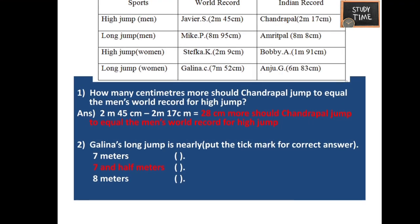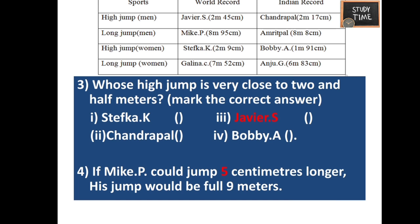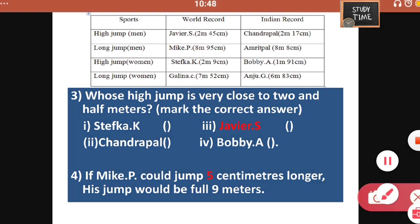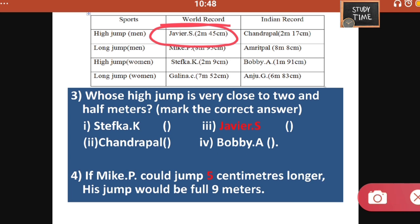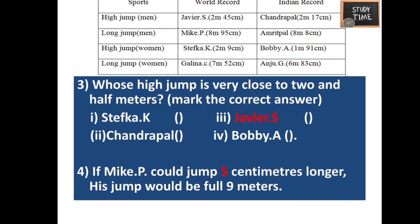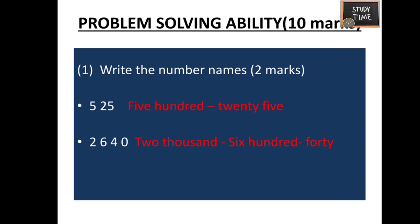Whose high jump is very close to 2 and a half meters? Javius is near to 2 and a half meters. If Mike could jump some centimeters longer, his jump would be a full 9 meters. Mike's score is 8 meters 95 centimeters — to reach 9 meters he needs 5 more centimeters. Next: number names — 525 and 2640.